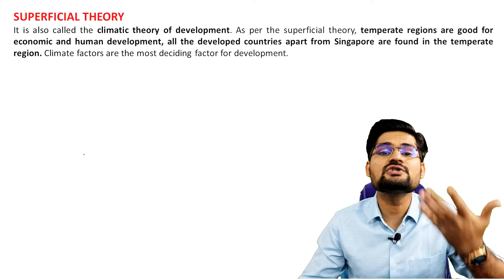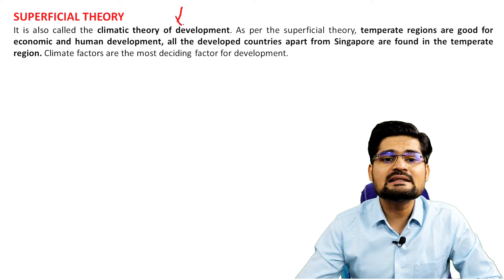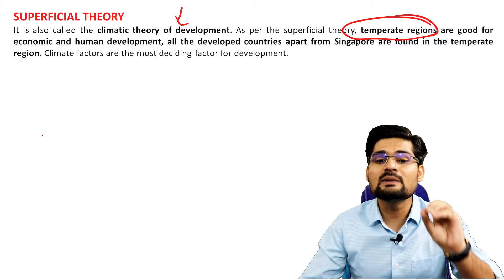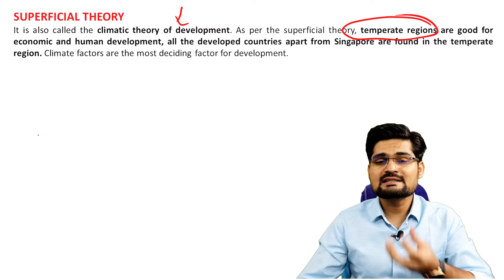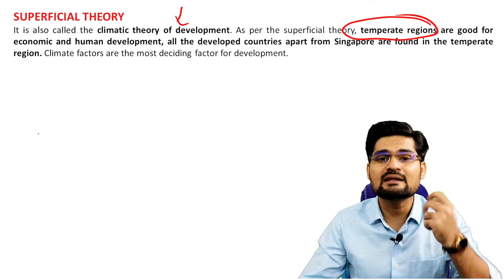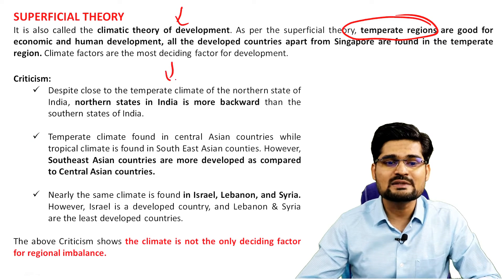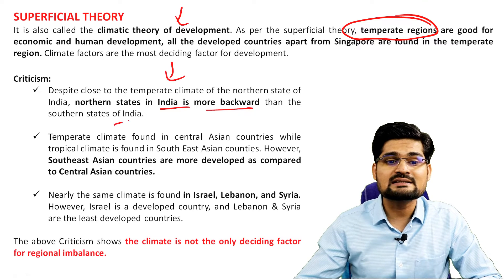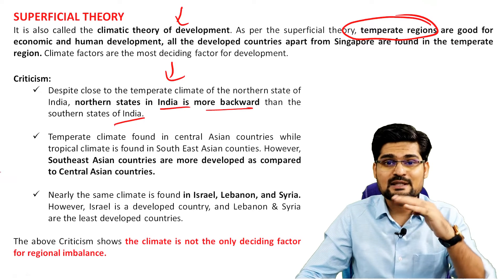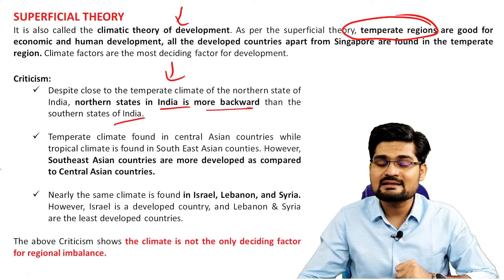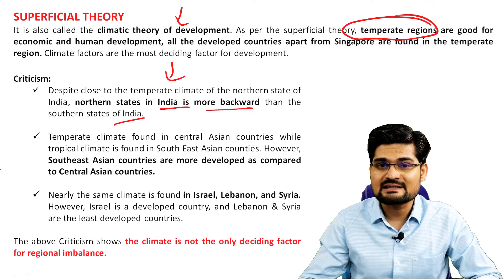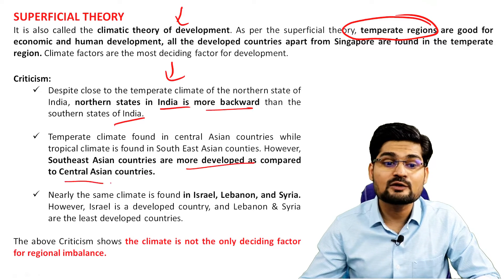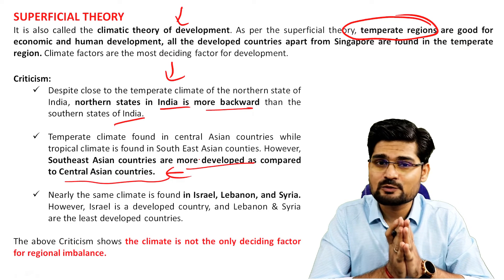Then there is the superficial theory, which is the climatic theory of development. It says that temperate regions are very good for economic development and human development, while tropical areas are poor. The criticism is that this pattern is not universal. In India, northern states are more backward than southern states — subtropical areas are poor while tropical areas contain more developed states. Southeast Asian countries are more developed compared to some Central Asian countries, further criticizing the superficial theory.